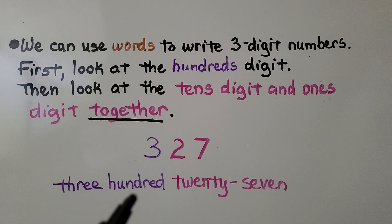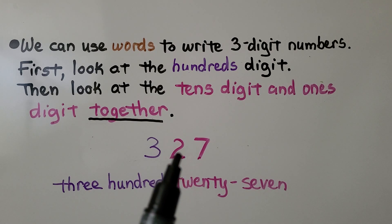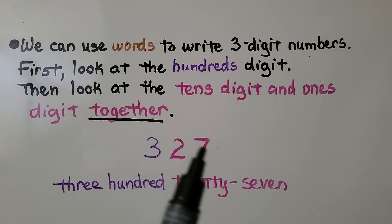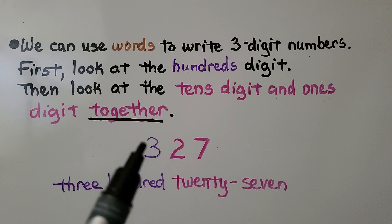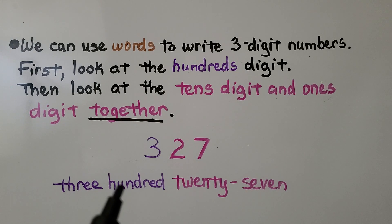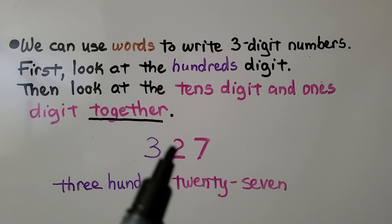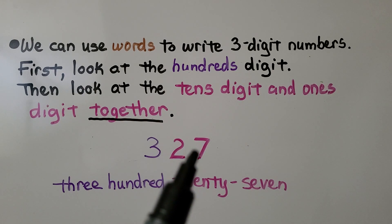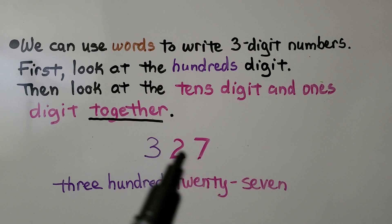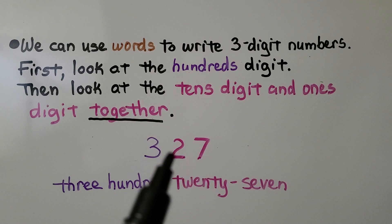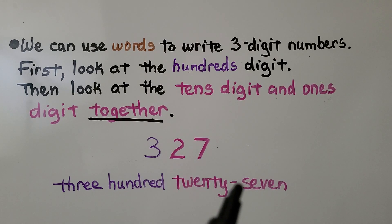We can use words to write three-digit numbers. First we look at the hundreds digit, then we look at the tens digit and the ones digit together. We have a three in the hundreds place — that's 300. We have a two in the tens place and a seven in the ones place — together that is twenty-seven. It needs a hyphen because it ends with a number in the ones place that is a one through a nine.